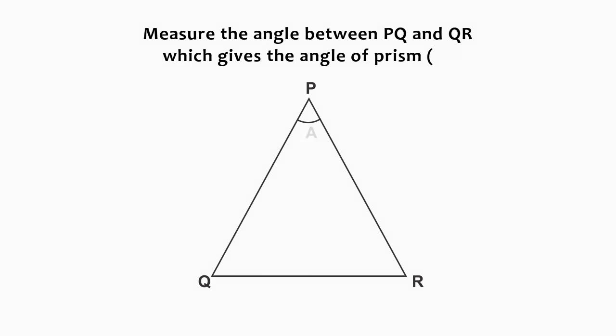Measure the angle between PQ and QR, which gives the angle of the prism, A.